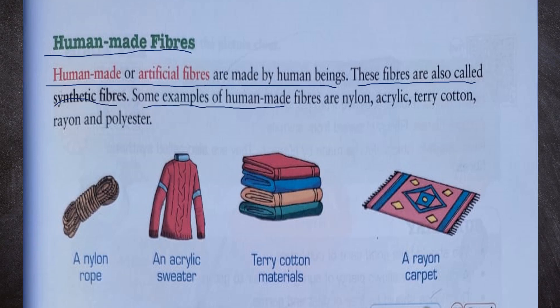Human-made fibers are also called synthetic fibers. Some examples of human-made fibers are nylon, acrylic, terylene, rayon, and polyester. We can see a nylon rope, an acrylic sweater, terylene materials, and a rayon carpet.